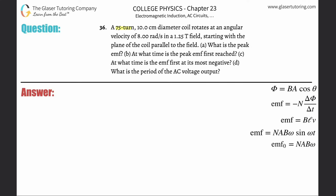Problem 36: A 75-turn, 10-centimeter diameter coil rotates at an angular velocity of 8 radians per second in a 1.25 tesla field, starting with the plane of the coil parallel to the field. Part (a): what is the peak EMF? This one's fairly straightforward — we're going to use the peak EMF formula.